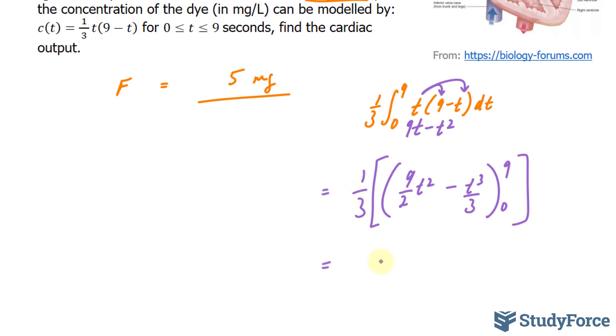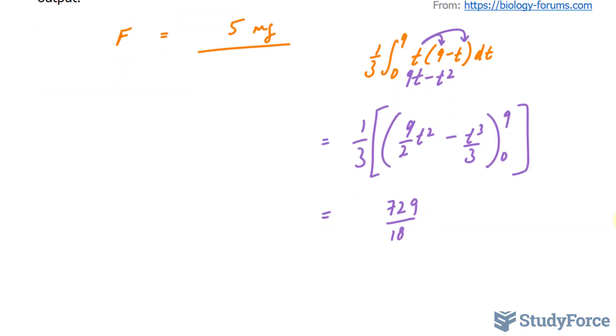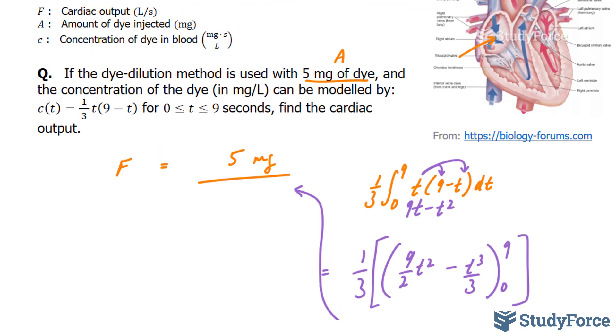If you do this correctly on your calculator, you should end up with 729 over 18. And the units are, according to this, mg times seconds over liters. I'll take this number now and place it right here. And this should end up giving us liters per second.